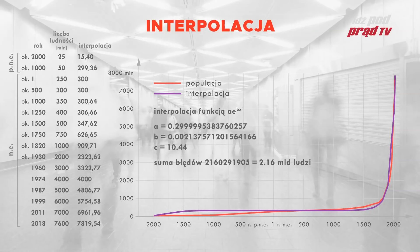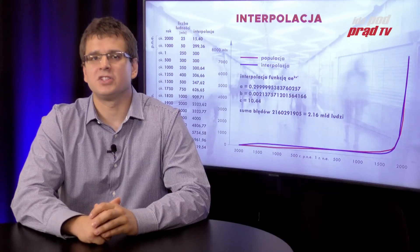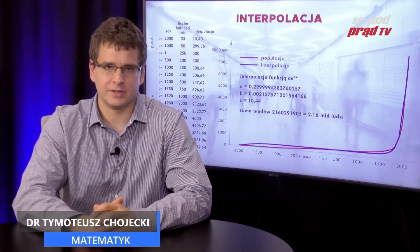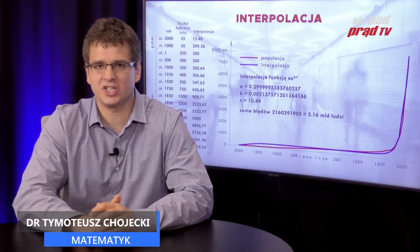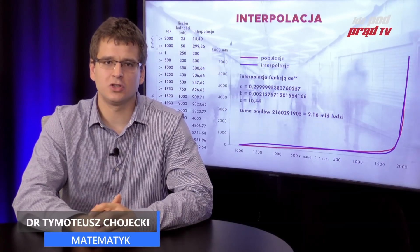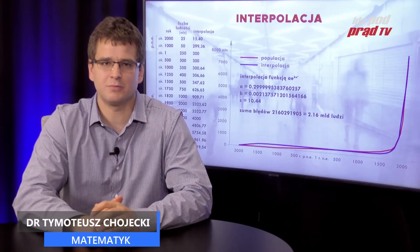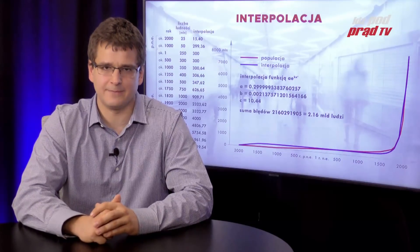By uniknąć komputerowych błędów obliczeniowych, wartościami funkcji są miliardy ludzi, a argumentami tysiące lat. Warto teraz zastanowić się, co nasza funkcja mówi nam o przeszłości. Widzieliście na wykresie, że przybliżenie jest rzeczywiście bardzo dobre. To znaczy, że wykres przybliżenia jest bardzo bliski do wykresu historycznych danych z wielkością populacji.